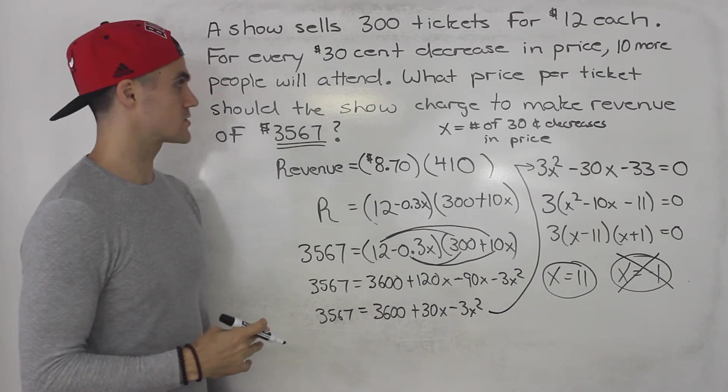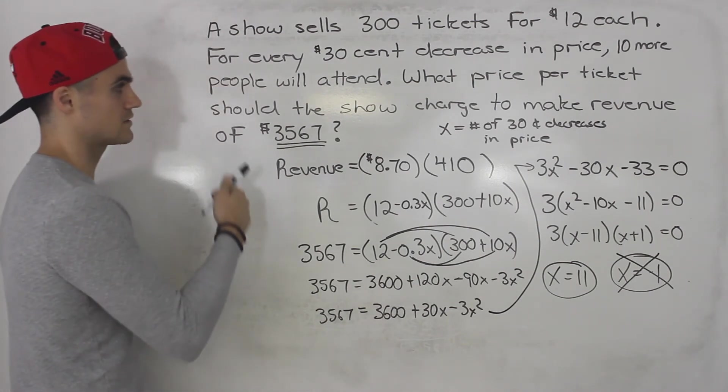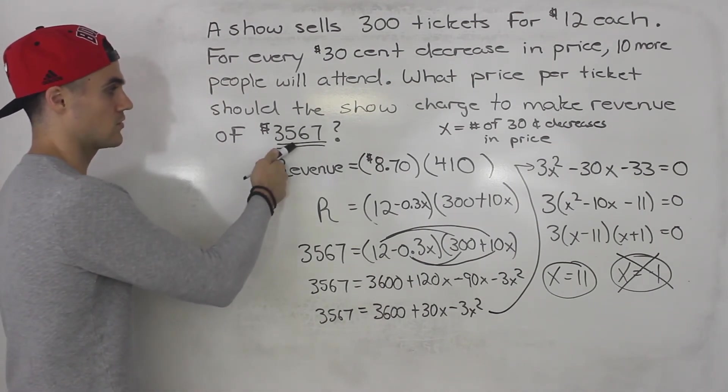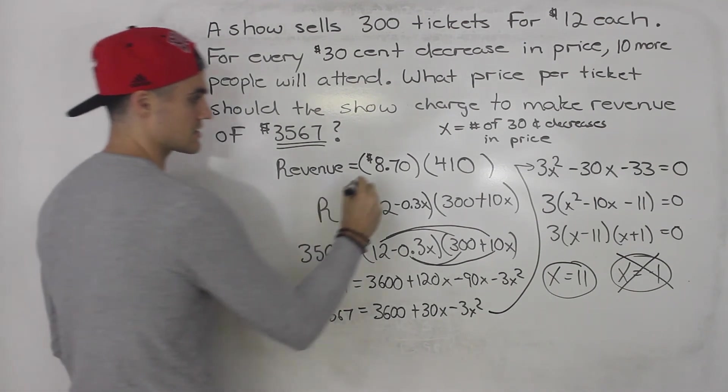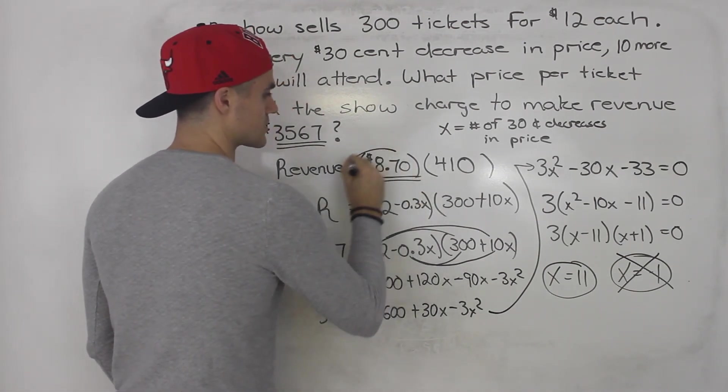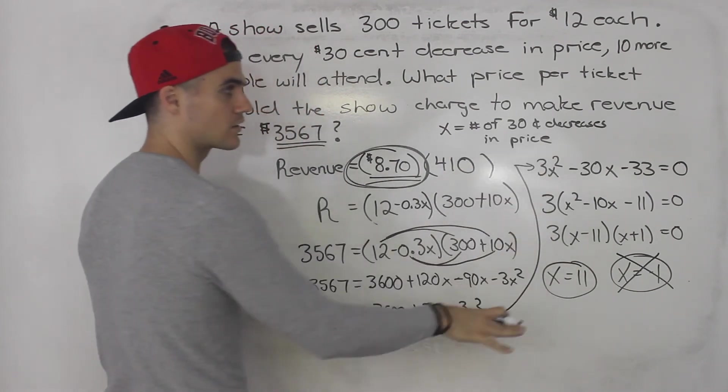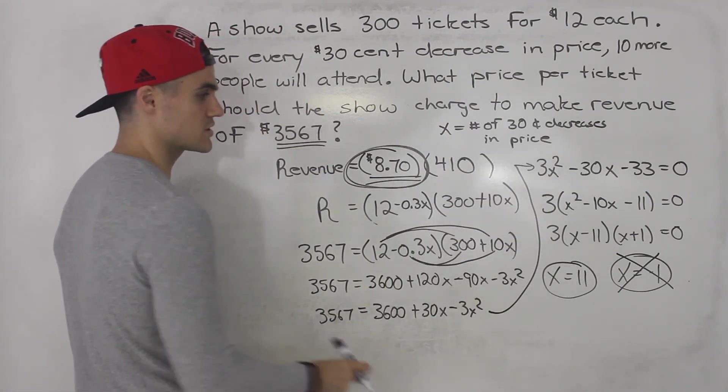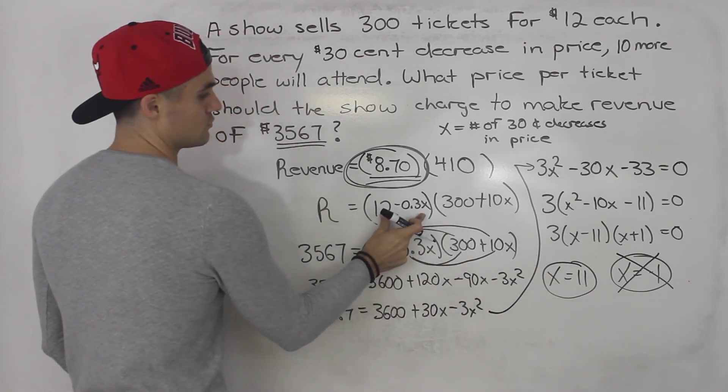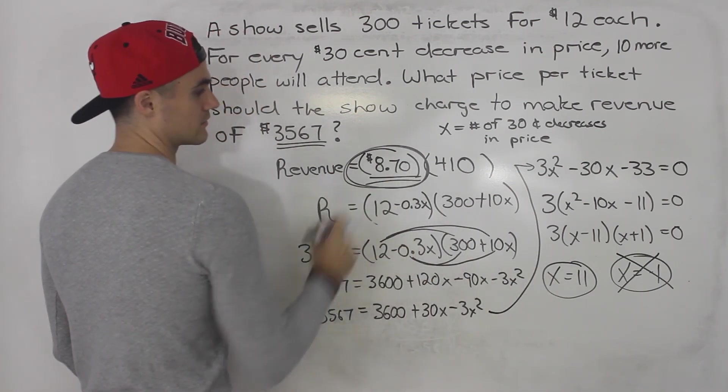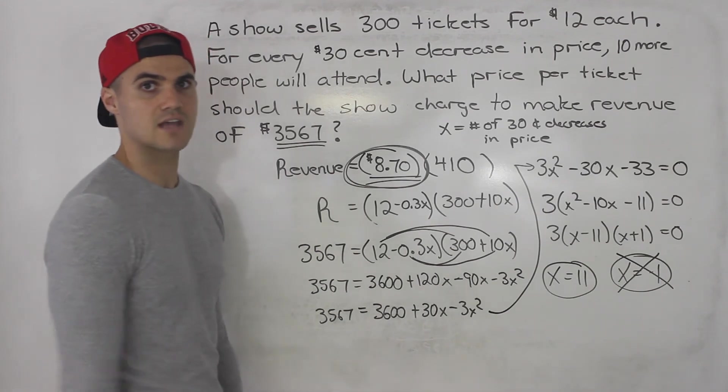Overall final answer to this question: the price per ticket that the show should charge to make revenue of 3,567 is $8.70. Remember, it's not this answer here. That is the number of decreases in price. You got to plug that in to that ticket bracket and you get $8.70 as your final answer.